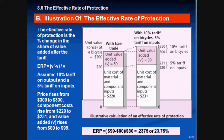With free trade, the value added is 80, and the unit price of a bicycle is 300. So 300 minus 80 equals 220, which is the cost of materials and component inputs needed to make the bicycles. Now, with a 10% tariff on bicycles, the price goes from 300 to 330. And with a 5% tariff on the inputs of 220, they become 231. So 330 minus 231 equals 99 — that is the new value added.